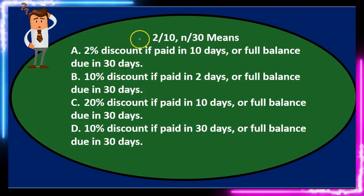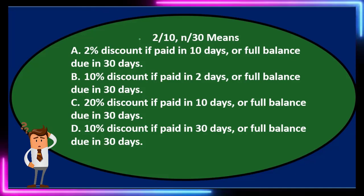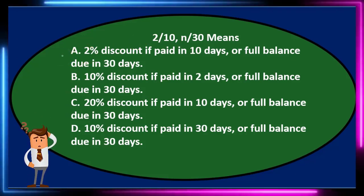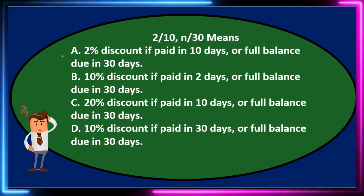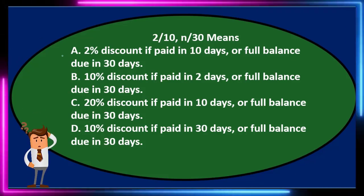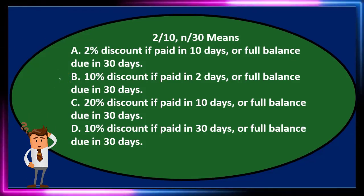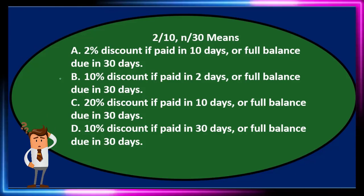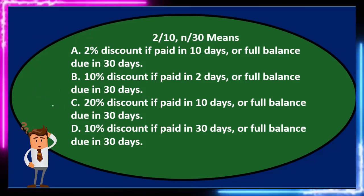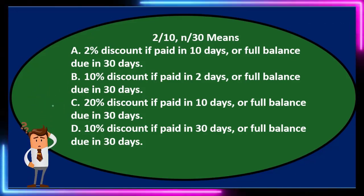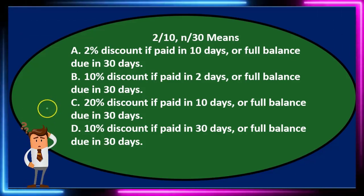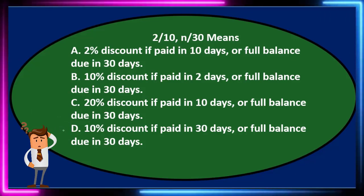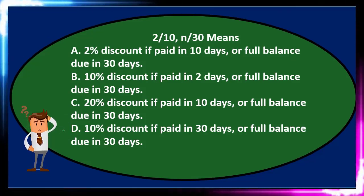First question: 2/10, N/30 means — A: 2% discount if paid in 10 days or full balance due in 30 days. B: 10% discount if paid in 2 days or full balance due in 30 days. C: 20% discount if paid in 10 days or full balance due in 30 days. Or D: 10% discount if paid in 30 days or full balance due in 30 days.